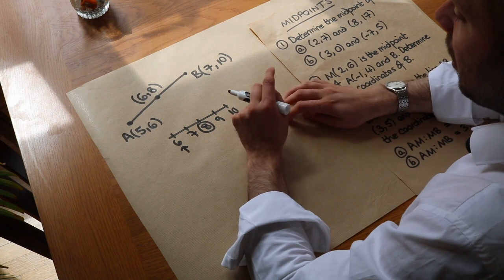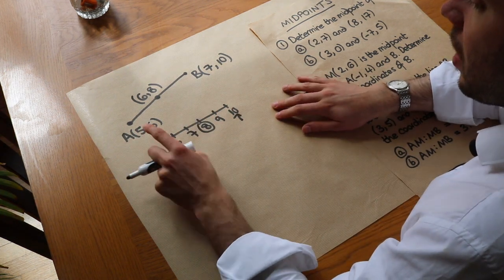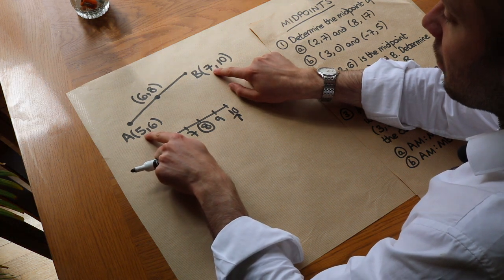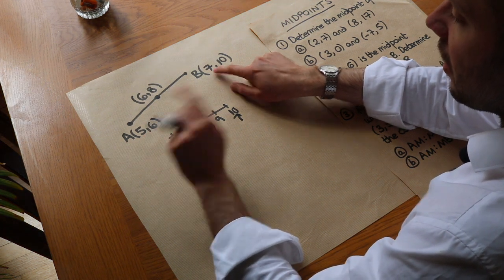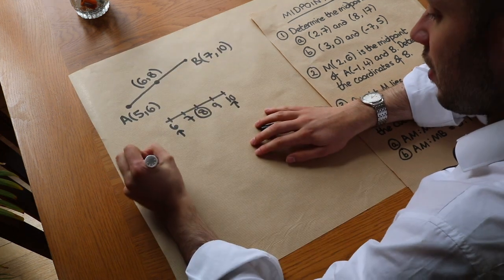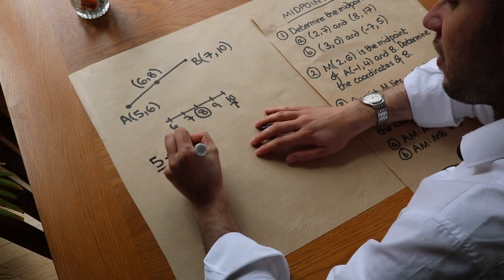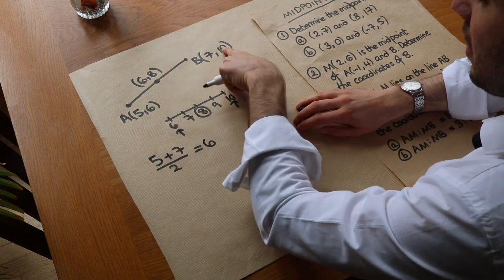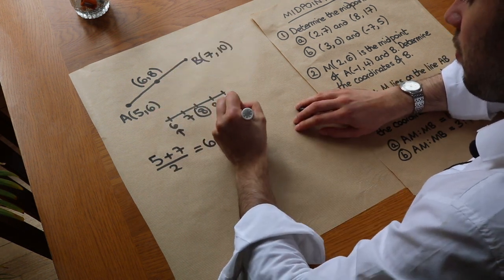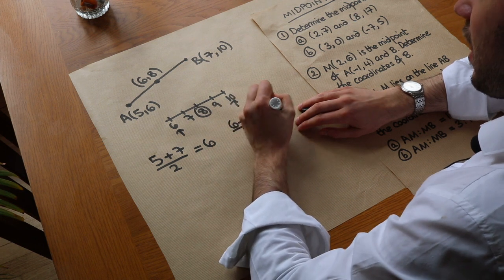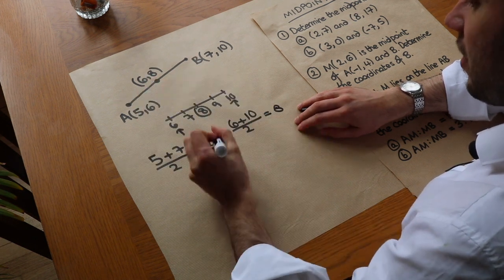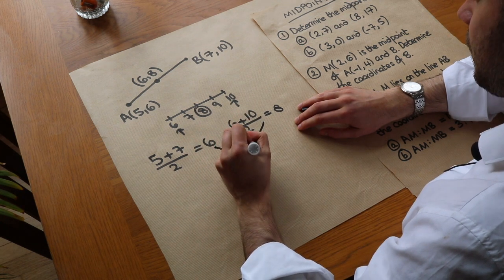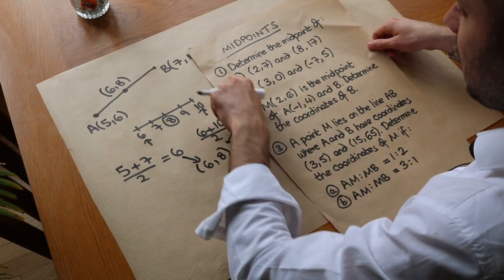But sometimes the numbers are a bit harder, so there is a formula. You just find the mean of the x values — to find the mean of two values you just add them together and divide by 2. So we do 5 plus 7 divided by 2, that's 12 divided by 2, which is 6. And 6 plus 10 divided by 2 gives you 8. So those combined give us the midpoint (6, 8).